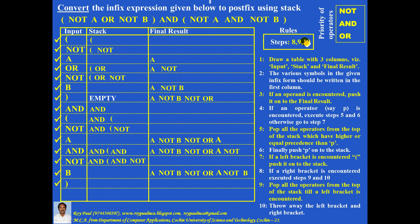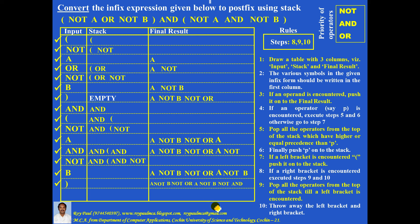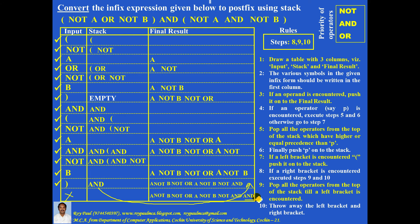A right bracket is encountered — two things. Step 9: remove all operators from the top of the stack until you get a left bracket. NOT must be removed first, followed by AND. NOT is removed to the final result, then AND is removed to the final result. Now you get a left bracket. Throw away the left bracket and right bracket. The stack now contains only the AND operator. No more input symbols remain — the remaining operator AND is popped to the final result and the stack is empty. The equivalent postfix form for this infix expression is complete.